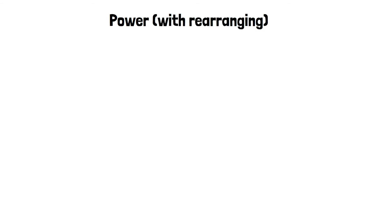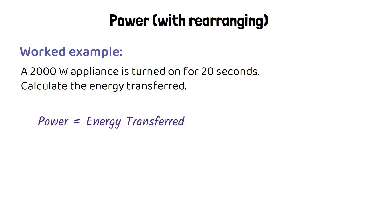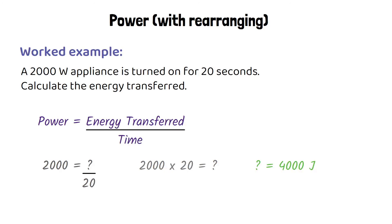Sometimes we have to do some rearranging after we've substituted into the equation. For example: a 2,000 watt appliance is turned on for 20 seconds — calculate the energy transferred. This time they've told us the power and the time and we have to work out energy transferred. We use the same equation: power equals energy transferred over time. The power is 2,000 watts, the time is 20 seconds. Once we've substituted, we rearrange: 2,000 equals 20 times the energy transferred, so energy transferred must be 4,000 joules.